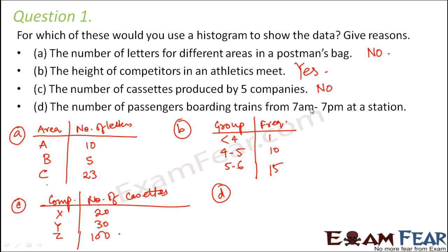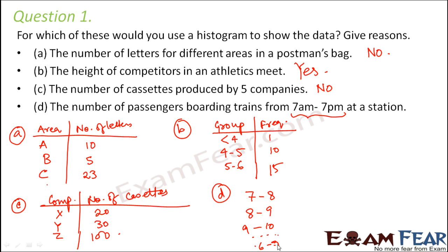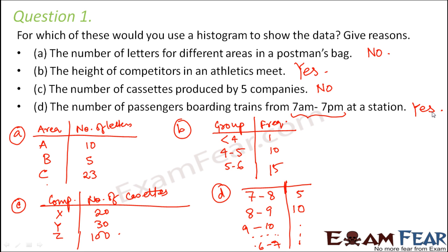Scenario D: number of passengers boarding trains from 7 a.m. to 7 p.m. at a station. This can be divided into groups — 7 a.m. to 8 a.m., 8 a.m. to 9 a.m., and so on till 6 p.m. to 7 p.m. — with a frequency of passengers for each interval. So yes, a histogram can be used to show this data.